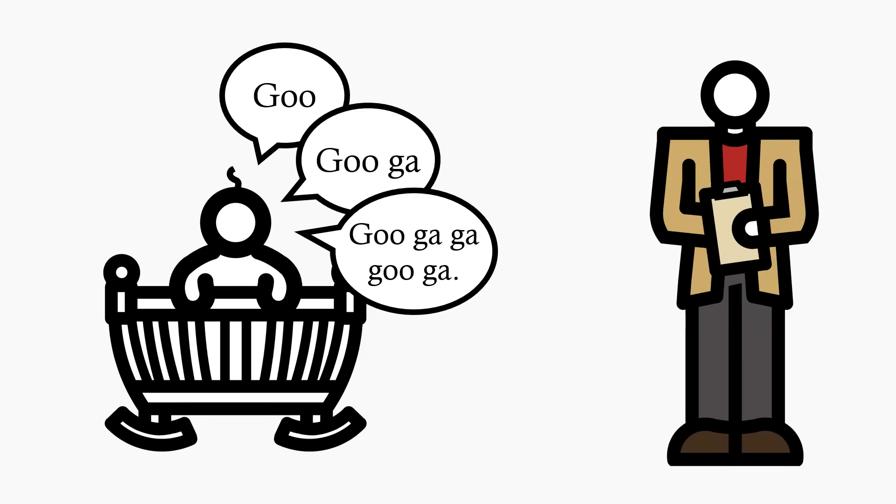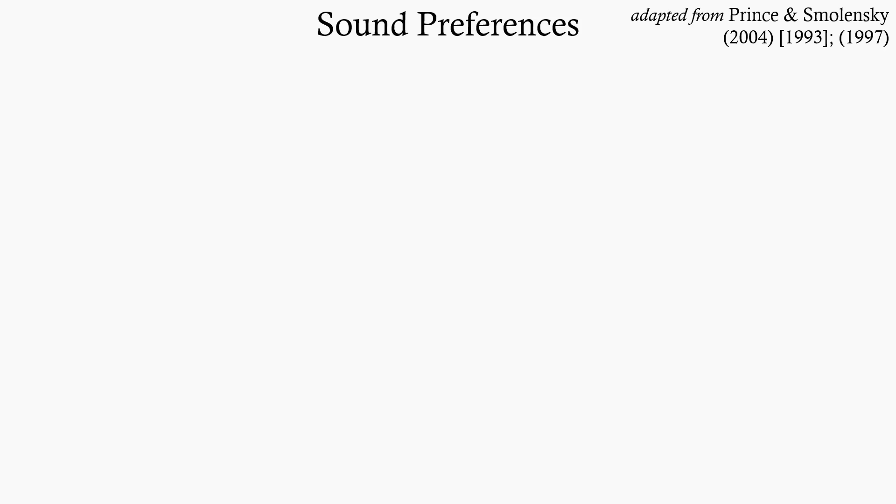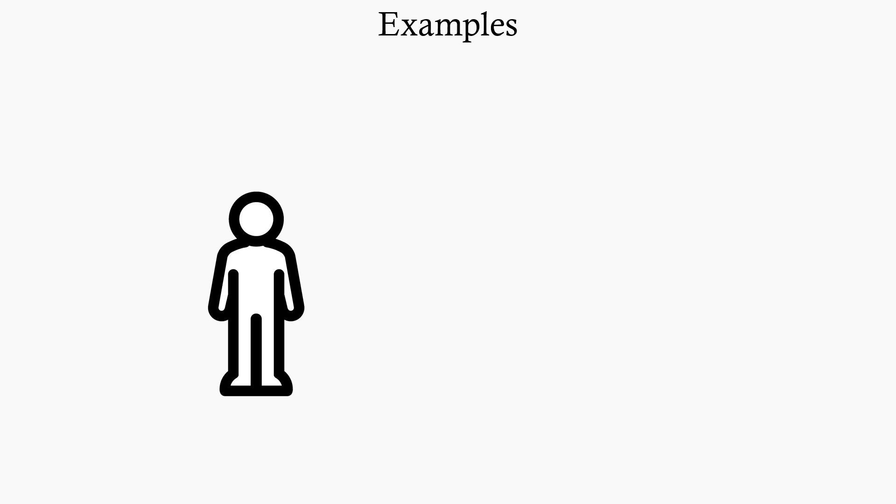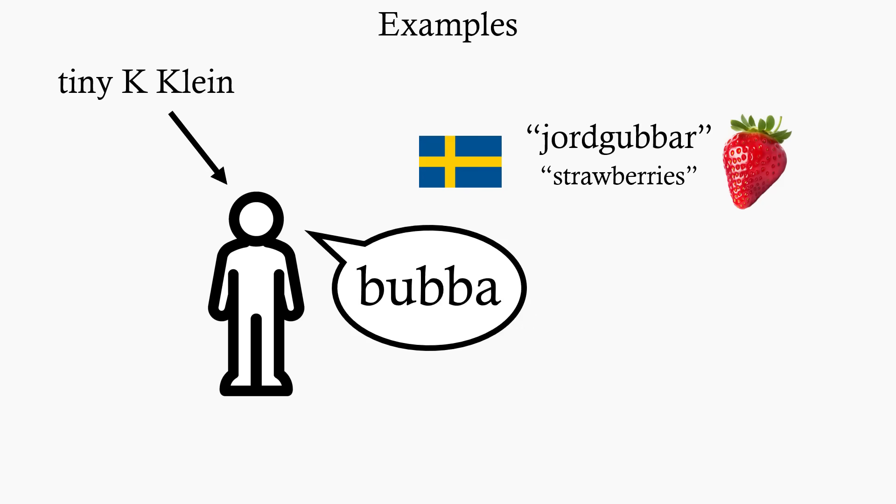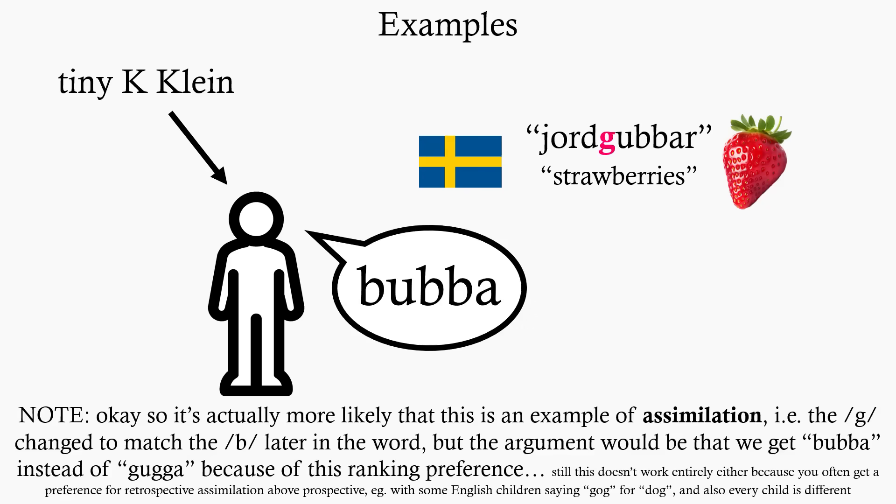See, when toddlers are starting to put together their first words, and then their first little phrases and sentences, they have a very interesting phonology. For instance, cross-linguistically, they tend to have preferences for certain types of sounds over others. Coronal sounds like T and S are often the best, and then labial sounds like P or F, and dorsal sounds like K and G are often avoided. We can see an example of this from my own language learning, where I used to say the word Jordgubbar, which is Swedish for strawberries, as Bubba, replacing that unwanted G with a much more pleasant B.